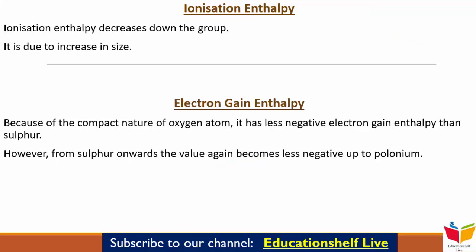Next जो हमारा characteristic है वो है Ionization Enthalpy। जैसे जैसे हम नीचे जाते जाएंगे, group में decrease होती जाएगी, क्योंकि size जो है वो increase हो रहा है। लेकिन Group 16 elements की Ionization Enthalpy, Group 15 वाले elements की Ionization Enthalpy से कम है, क्योंकि Group 15 में extra stable half-filled p orbital electronic configuration होता है।